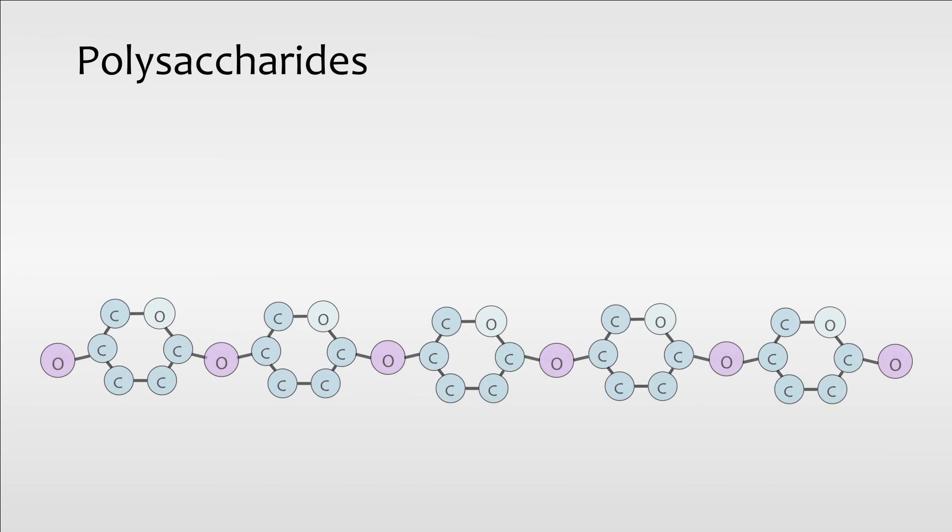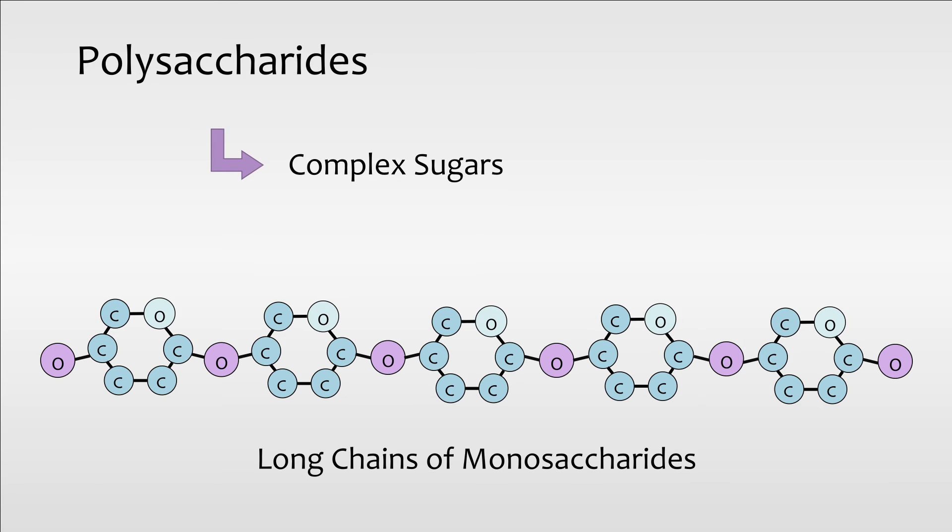Polysaccharides are long chains of monosaccharides. These chain molecules can be either in straight or branch form. They are the complex sugars.